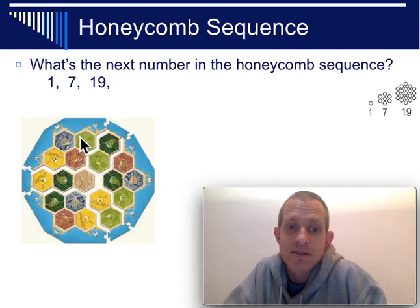It happens that there's 19 tiles in this picture, and if you add another row all the way around the outside, there ends up being 37 tiles. And those numbers, 1, 7, 19, they're called the honeycomb sequence.